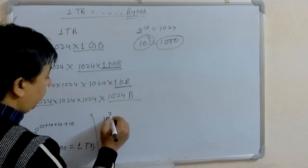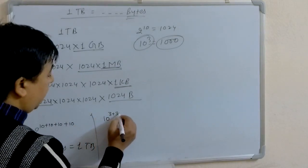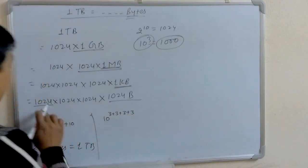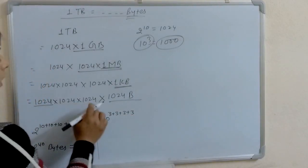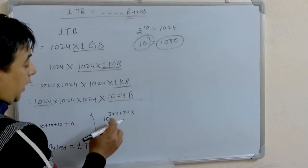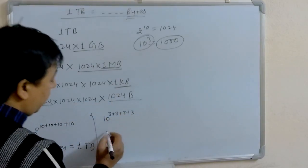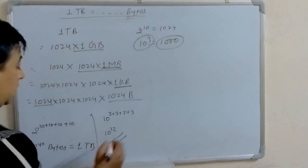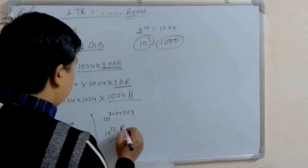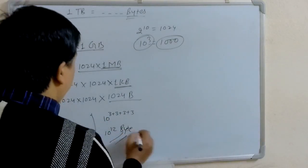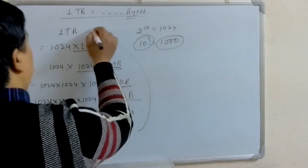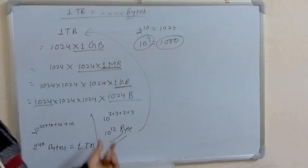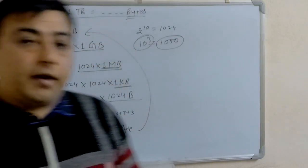In case of ten power: three plus three plus three plus three — one, two, three, four. That is why ten power twelve bytes is equal to one terabyte.